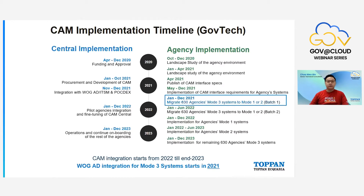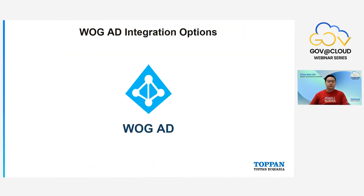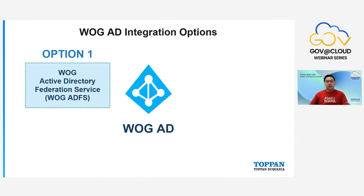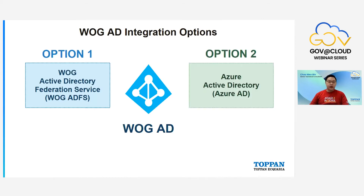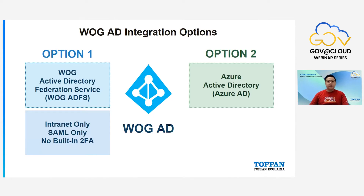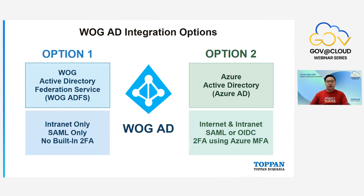When it comes to WOG AD integration, there are two integration options. Option 1 is WOG AD FS: it only serves the intranet, supports SAML protocol only, and has no built-in 2FA. Option 2 is Azure AD: it serves both internet and intranet, supports both SAML and OIDC, and supports 2FA using Azure Multi-Factor Authentication. Depending on your use case, you'll need to choose one option. Our product supports both integration options.